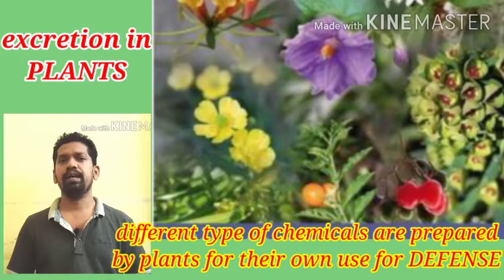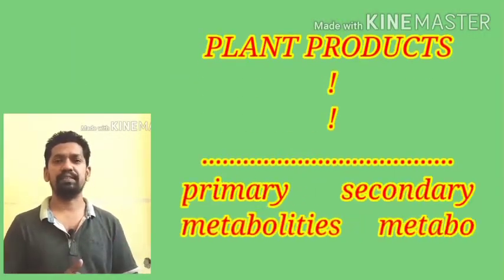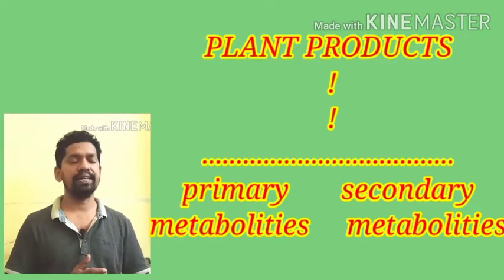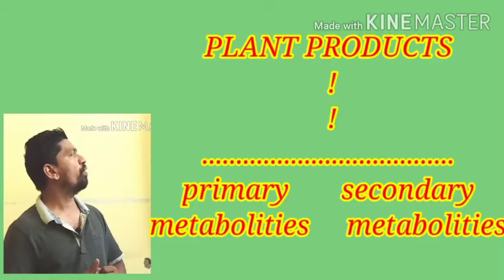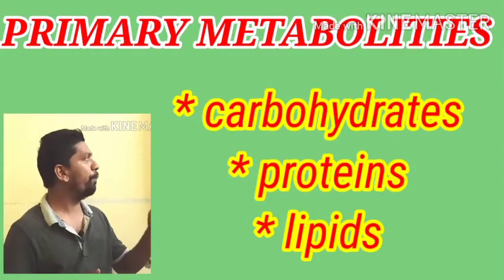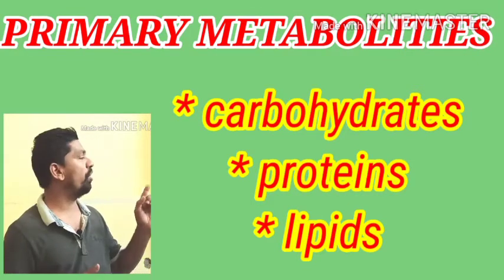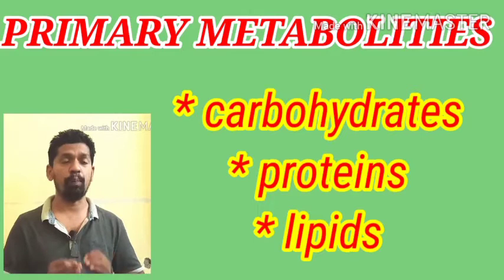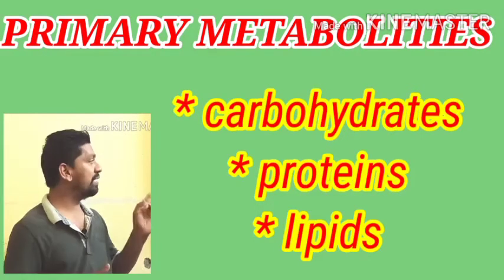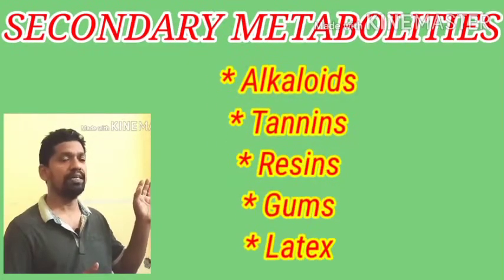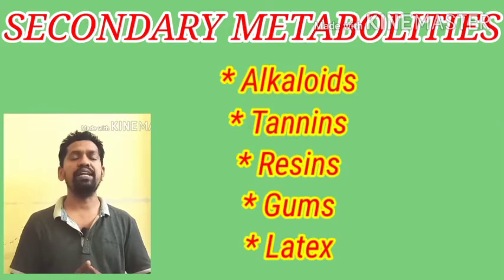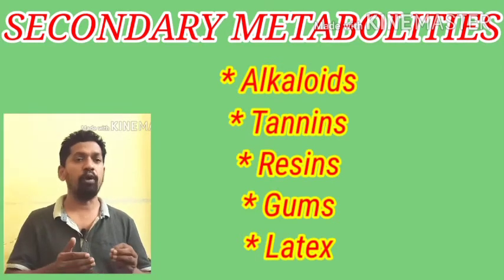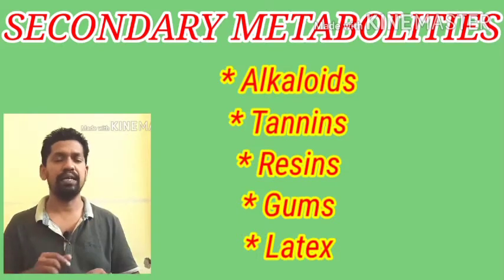Generally, plants produce mostly two types of substances, classified into two categories: primary metabolites and secondary metabolites. Carbohydrates, proteins, and lipids are known as primary metabolites, which are important for the growth and development of the plant. Substances which do not play an important role in growth and development are known as secondary metabolites.